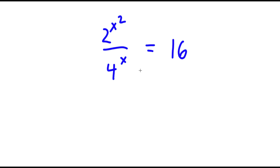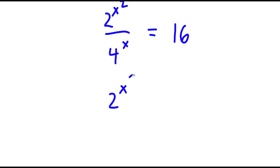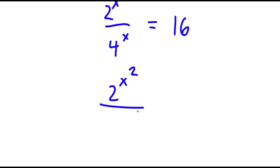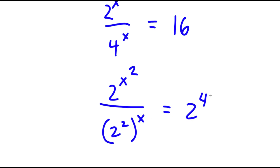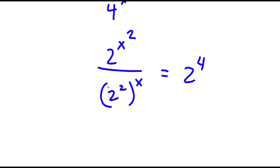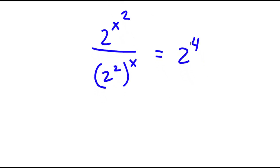In this problem I have 2 to the power of x squared over 4 to the power of x is equal to 16. I'm going to rewrite this as 2 to the power of x squared over 2 squared to the power of x is equal to 2 to the power of 4, so all my terms have a base of 2.